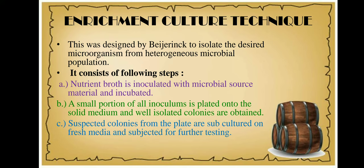Casein is a protein, so a zone of clearance around a colony means it has utilized the casein in the media, indicating it is producing alkaline proteases which have degraded the casein. I will take this colony, subculture it, and go for further testing.